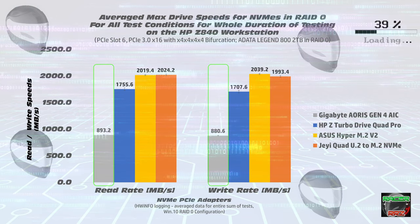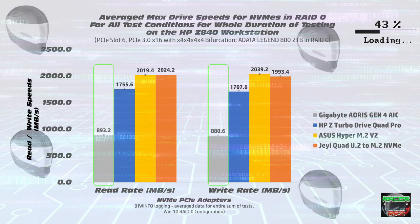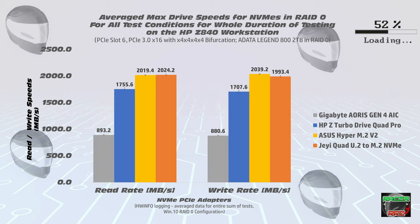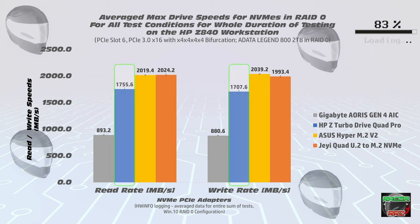The surprising result is the Gigabyte Aorus — the one I thought would be the fastest — came out the slowest. No matter what I did in the RAID 0 configuration it wouldn't budge, stuck around the lowest speed. Maybe there's a conflict, or it's not managing RAID well, or there's an issue converting from Gen 4 to Gen 3. The HPZ Turbo Drive came in second with around 1700 MB/s per drive.